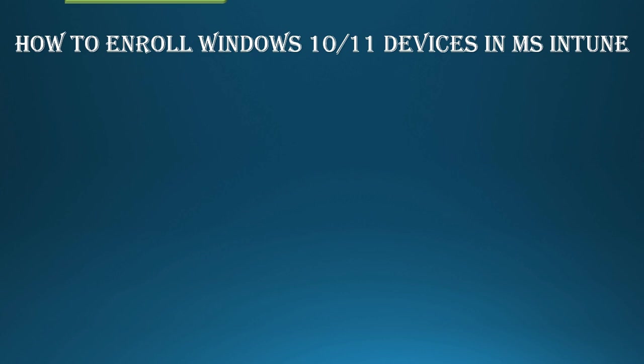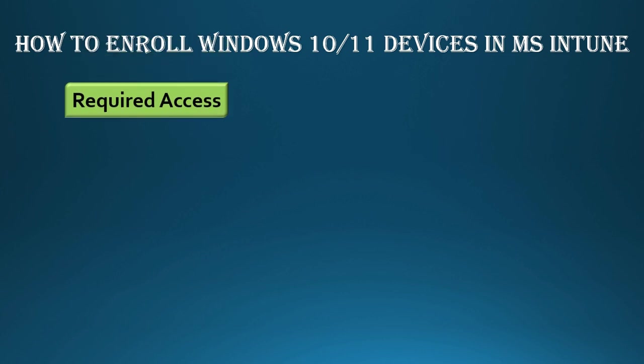Let's talk about an administrative activity. We have a global administrator role. Suppose you don't have a global administrator role — you have an Intune administrator role. In the Intune administrator role, you go to Intune configuration and then Device Enrollment.